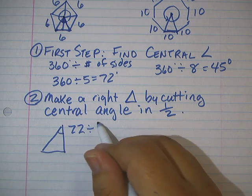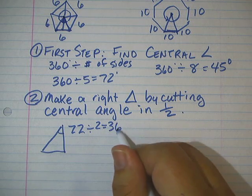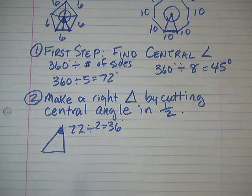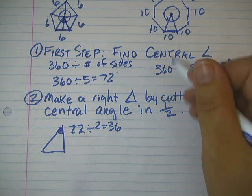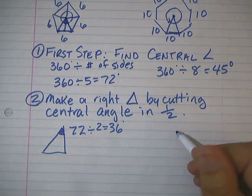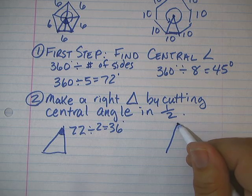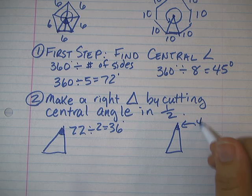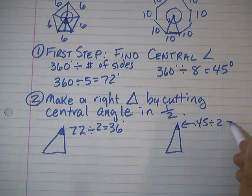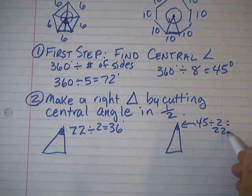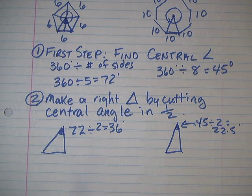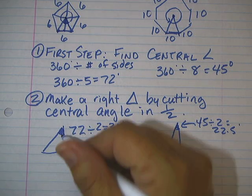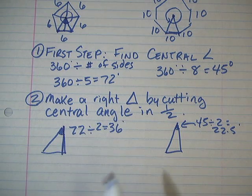It is 45 divided by 2, which is 22.5 degrees. The apothem, remember, is this side. So if I wanted to kind of highlight that, this is the apothem. This is the apothem for this polygon.